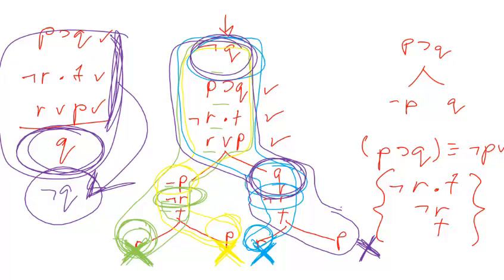You'll need to learn the tree rules and practice the trees. There's a little bit of strategy involved in constructing trees in a smart way, but it's a straightforward method of proof. Follow the recipe — it's pretty much decidable.